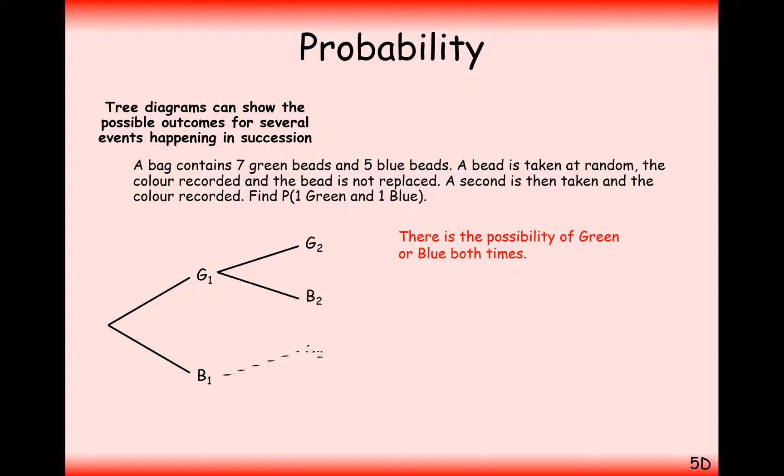So what we can do here is draw a tree diagram that gives us all the different possible outcomes, one followed by another. Green followed by another green would be this branch here. Green followed by a blue would be that branch there and so on. And what we can do is write the probabilities onto the branches like this.